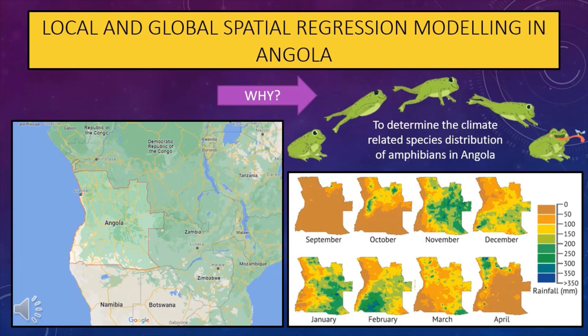Spatial regression modeling takes into account the effects of spatial autocorrelation. The models which we used in this task were the Ordinary Least Squares, OLS, a global model, and the Geographically Weighted Regression model, GWR, which is a local model. The main difference between local and global being that global models make a single estimate for the entire data set, while local models only consider portions of the data set at a time, making multiple assumptions for the entire data set.